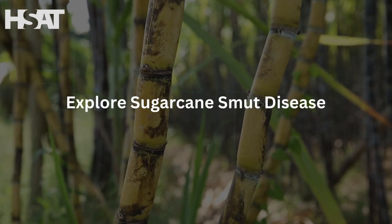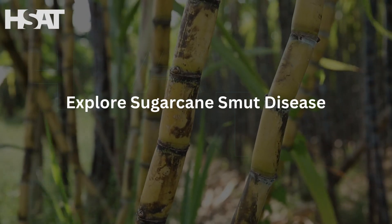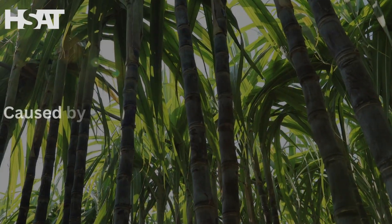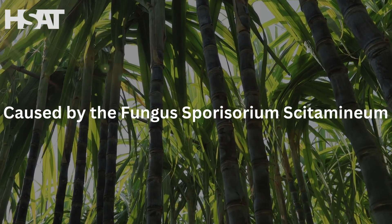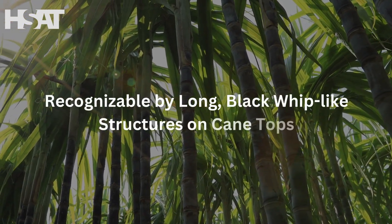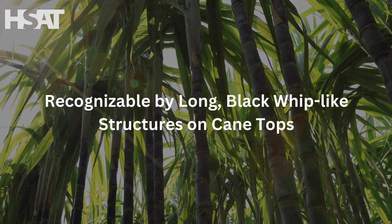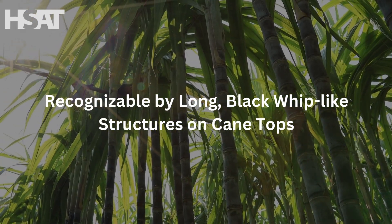We take you to the sugarcane field to explain the sugarcane smut disease, caused by the fungus Sporosaurium cytominium, and its infamous sign: long, black, whip-like structures emerging from the cane tops.